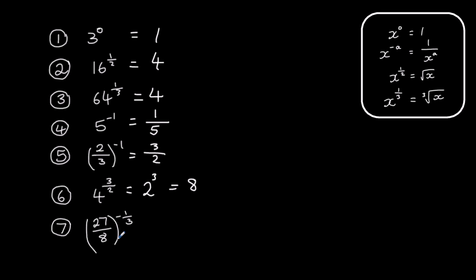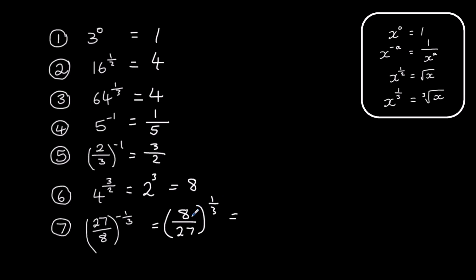Here again two rules are combined: a power of a third and a minus, so we'll have a cube root and we'll flip it over. We'll flip it over first — so eight over twenty-seven — still to the power of a third. Then we cube root: what times itself and times itself again makes eight? That's two. And what makes twenty-seven? That's three times three times three.